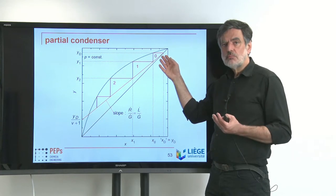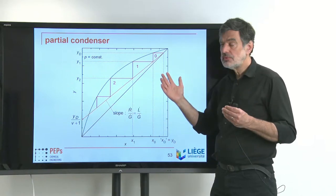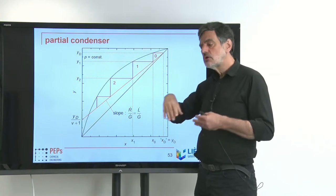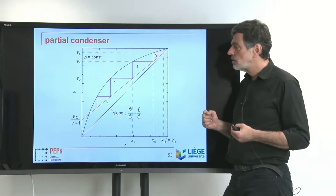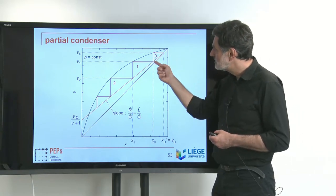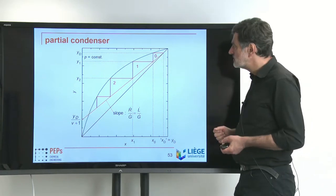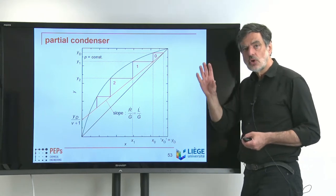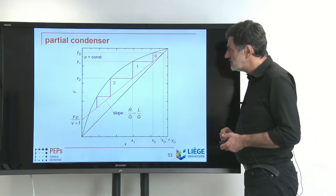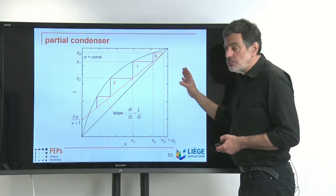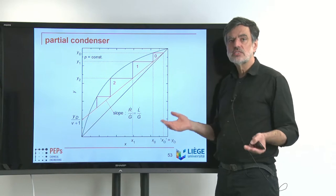This only makes sense if your product can be a vapor stream — especially if your next process step requires vapor or superheated vapor, you would prefer to have vapor ready rather than re-evaporate a liquid. In that case, you would regard a partial condenser as the optimal solution. You get this theoretical stage for free, which is counted as stage zero to be consistent with our nomenclature, while theoretical stage one is the first realized with the internals of the distillation column.